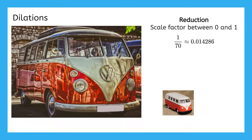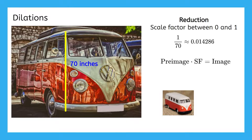The scale factor here is close to 1/70th, or approximately 0.014. Basically, if the original height of the van is 70 inches, we can use this equation to help us solve for the height of the toy van. This equation tells us to multiply the pre-image, which is 70, times the scale factor (SF) of 1/70th. That gives us the image, or the height of the toy car. So when substituting in our values for the pre-image and scale factor, we get 1 inch as the height of the toy car.